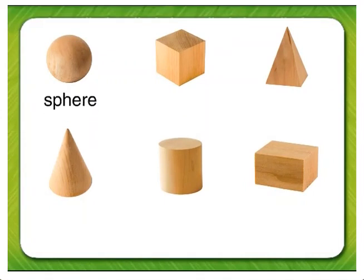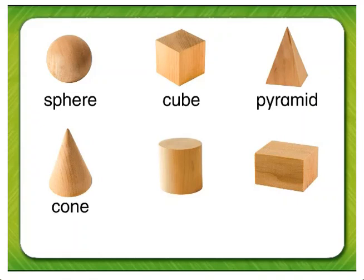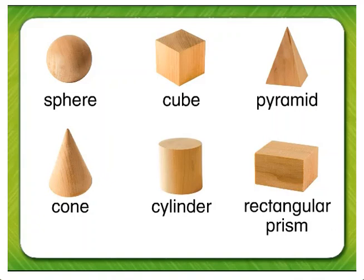This three-dimensional figure is a sphere. This figure is a cube. Here is a pyramid. If you like ice cream, you may know the name of this three-dimensional figure. Cone. This three-dimensional figure is a cylinder. Our final three-dimensional figure has two words. Rectangular prism.